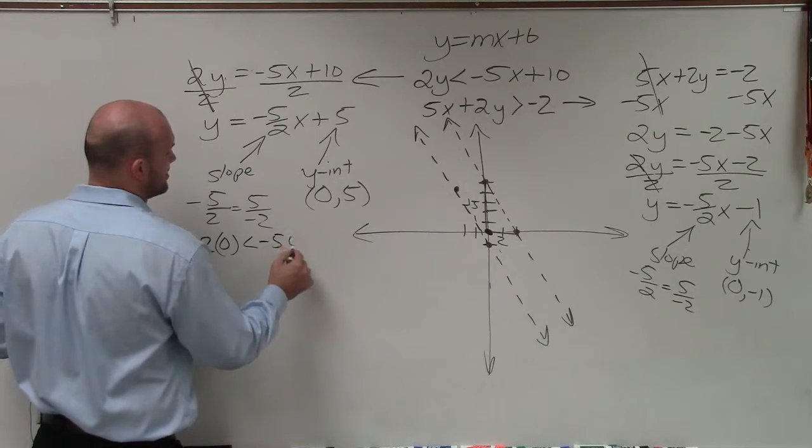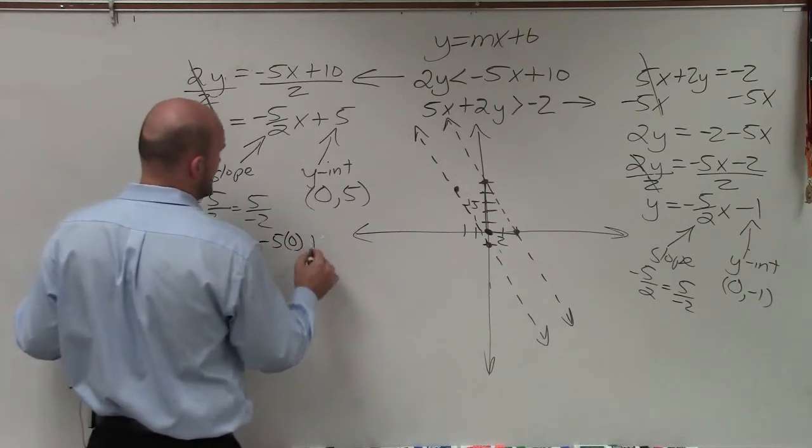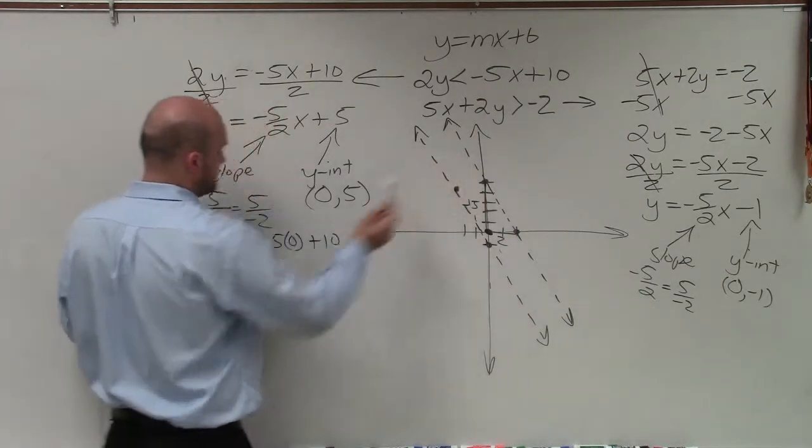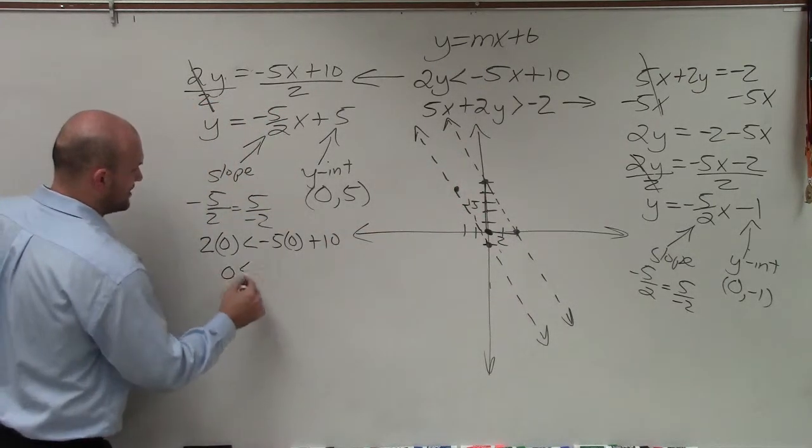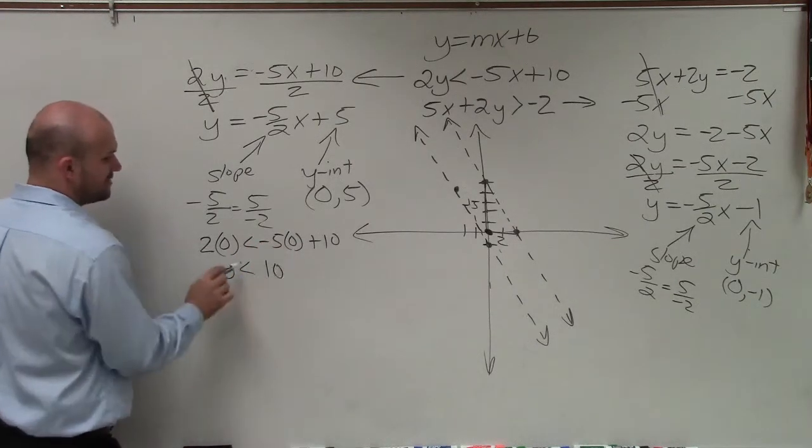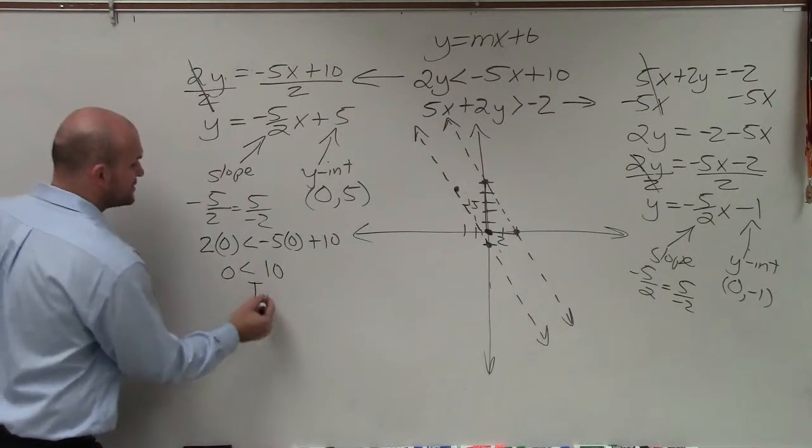So therefore, now I'm just going to plug in 0 for x and for y. And now I go ahead and evaluate. Now remember, this is my first boundary line that I drafted right here. So therefore, I have 0 is less than. Negative 5 times 0 is 0 plus 10. And you can see 0 is less than 10. That is true.